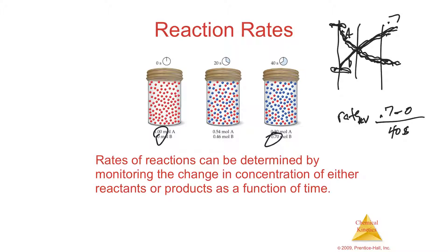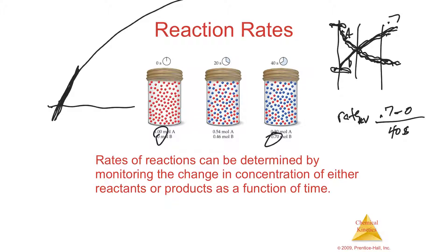For the instantaneous rate, you need either a little bit of calculus or a little bit of geometry. If you draw the curve and take a tangent line at a given point, the steepness of that line is your rate at that moment.